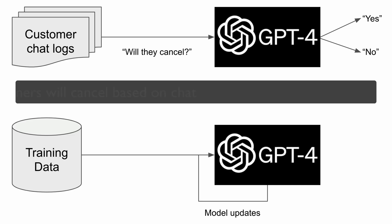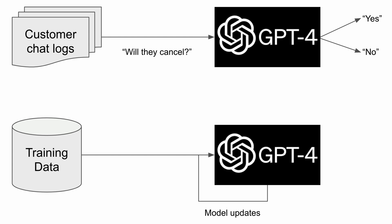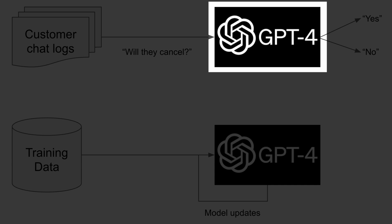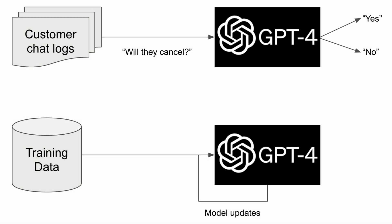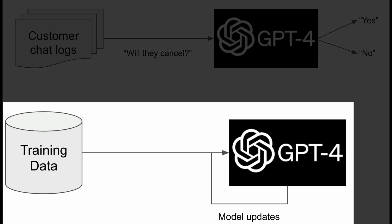Here's a simple example. Suppose you want to predict whether customers will cancel based on chat conversations. You first select a foundational LLM trained on general data by companies like OpenAI. You then send chat conversations to the LLM and tell it to predict whether customers will cancel. The LLM isn't very good because it doesn't know enough about your company. So you spend a few months building a new training data set based on your customers' products and services, and you retrain the model, hoping this new information will improve results.